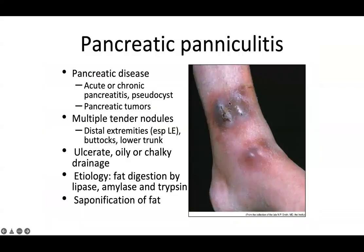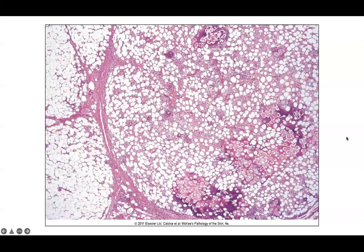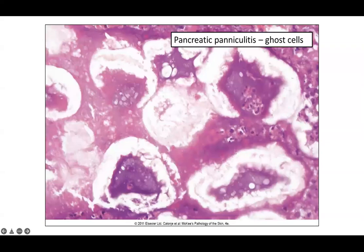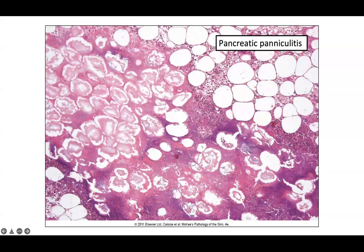These large cells are called ghost cells — large adipocytes filled with eosinophilic material with a rim of calcification and a deep purple basophilic stain. This is saponification due to leaked enzymes, giving you that draining oily material once it exudes through the skin. Importantly, if you see a pattern like this, make sure the patient doesn't have a concurrent infection, especially mucormycosis or Rhizopus, as pancreatic paniculitis can masquerade as a fungal infection in immunosuppressed patients.